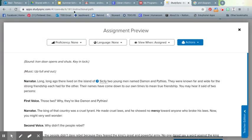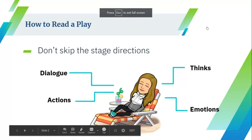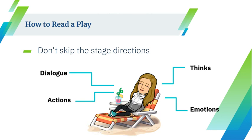Stage directions are meant to give us information about how to actually act out the play. When we are just reading the play — not actually acting it out — these pieces are so important because they tell us about our characters. In a typical story, we learn about our characters through their dialogue, what they say to other people, their actions, what they think, and their emotions. A lot of what they think and feel we learn from those background description paragraphs, not from their actual speech patterns or actions.